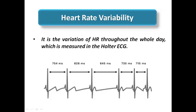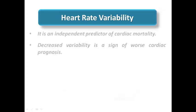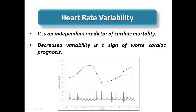Heart rate variability is a measure present in Holter ECG — not surface ECG — as it measures variation in heart rate throughout the whole day. This is a normal physiological phenomenon and is an independent predictor of cardiac mortality if reduced. In normal conditions there should be heart rate variability throughout the day; when this variability is reduced or diminished, it is a sign of worse prognosis. In patients with left ventricular dysfunction, heart rate variability is decreased, and this reflects the sympathetic and parasympathetic innervation of the heart.